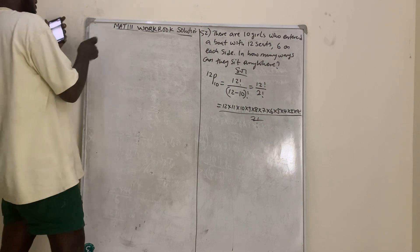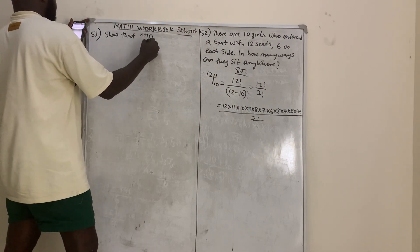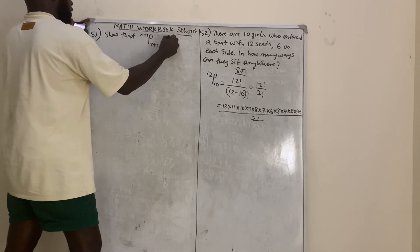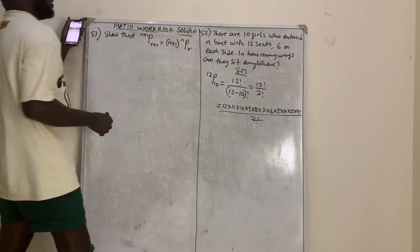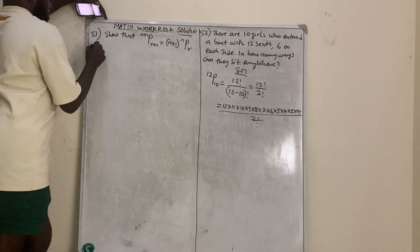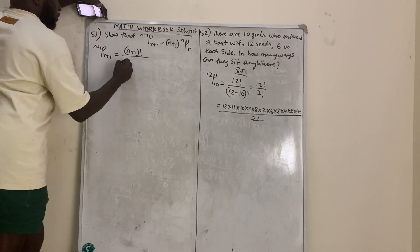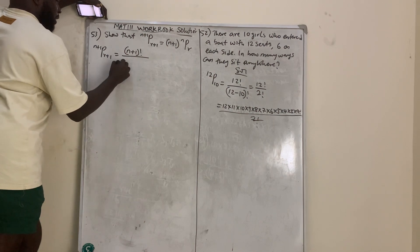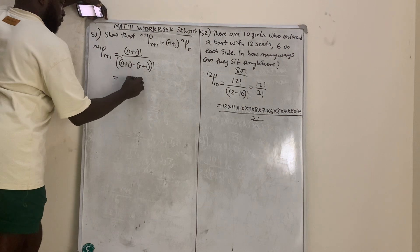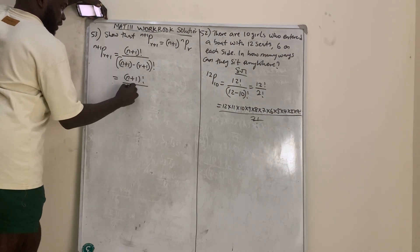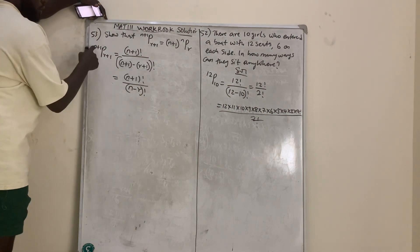Question number 53 says to show that (n+1) permutation (r+1) equals (n+1) times n permutation r. First, let's evaluate (n+1) permutation (r+1): this equals (n+1) factorial over (n+1 minus (r+1)) factorial, which simplifies to (n+1) factorial over (n minus r) factorial, since the ones cancel.